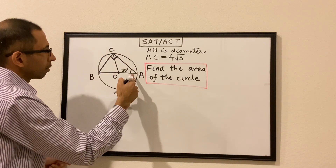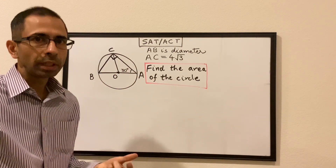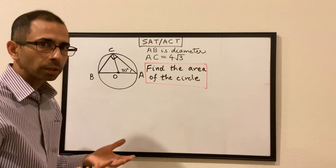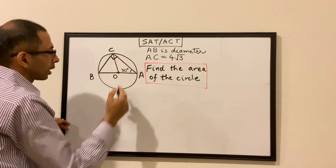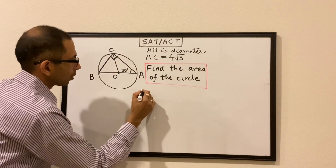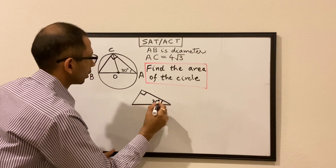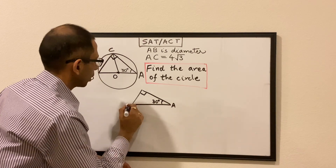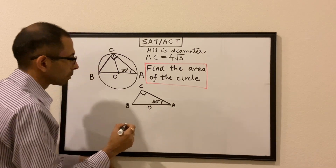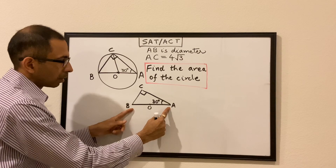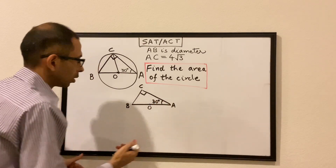We have a right angle triangle with a 30 degree angle. To find the area of the circle we need the radius — our aim is to find the radius. If we can find the length of AB, we can halve it to get the radius and then find the area.